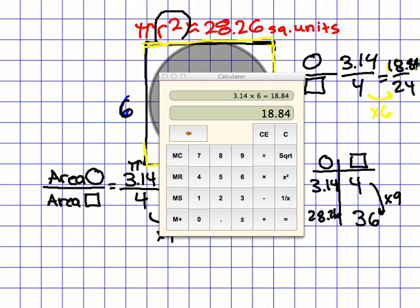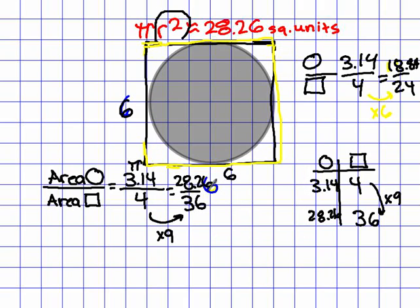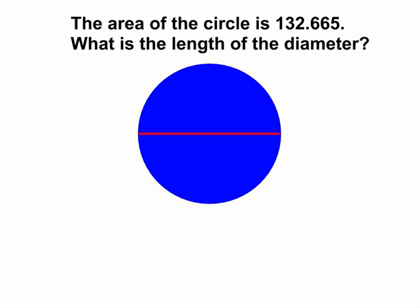This is especially useful when we get some more challenging problems, keeping in mind the relationship between a circle and a square that it would be perfectly enclosed in. For example, if we take a look at this next problem, now, you are given the area, but you don't know the diameter. The area of this circle is 132.665, and it should say square units, because of course area is measured in two dimensions. What is the length of the diameter?